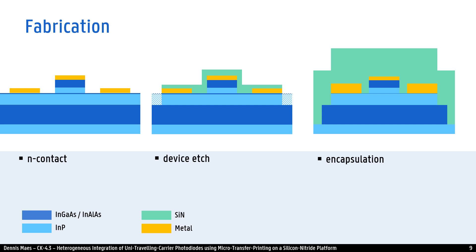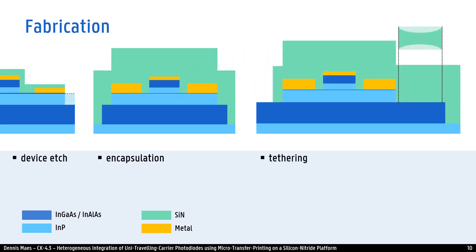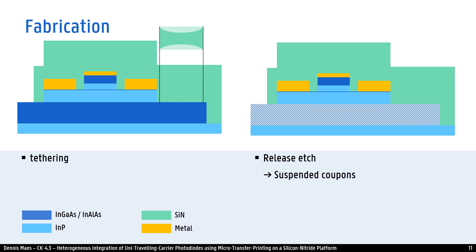To prepare the device for transfer printing it is first encapsulated in silicon nitride. In the silicon nitride, tethers are patterned and we can create suspended coupons by under etching the indium aluminium arsenide layer presented in dark blue.